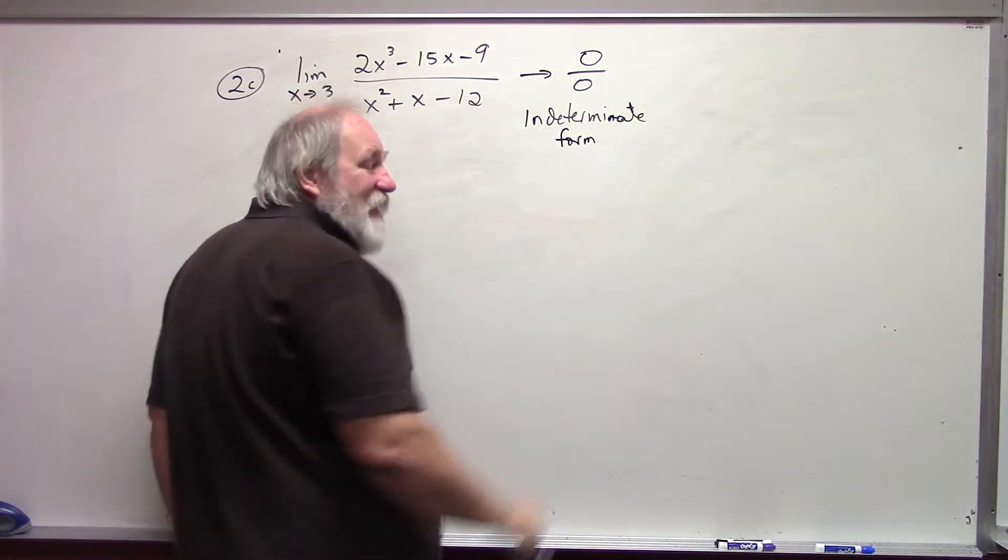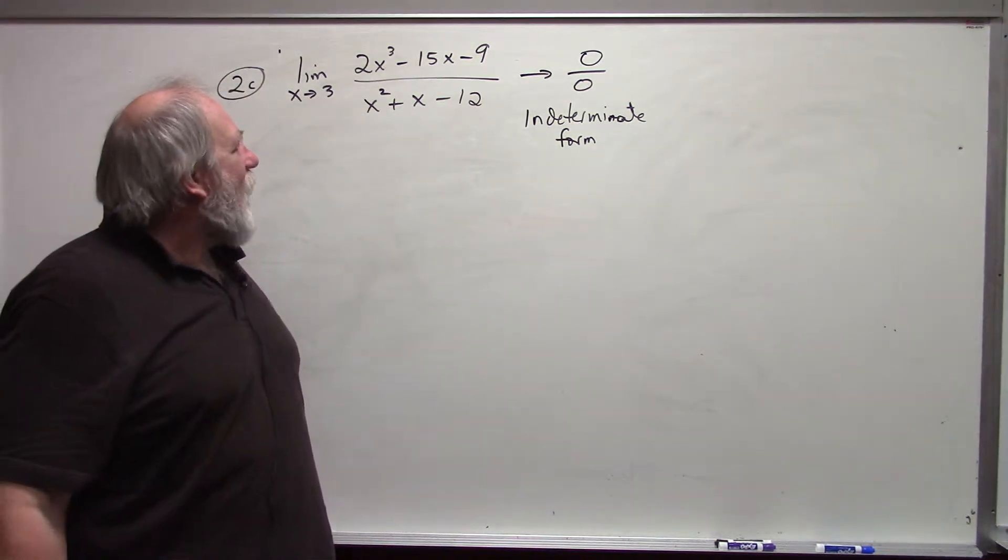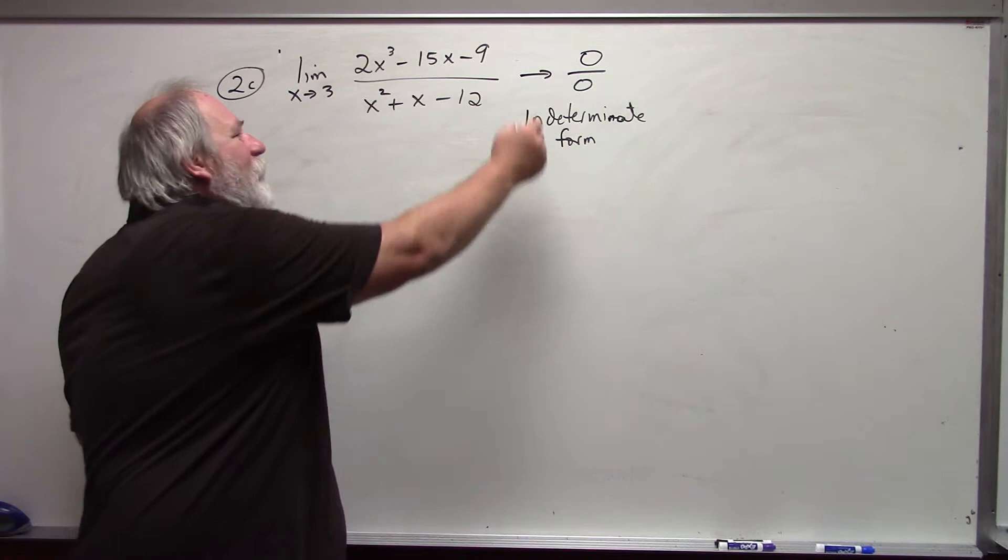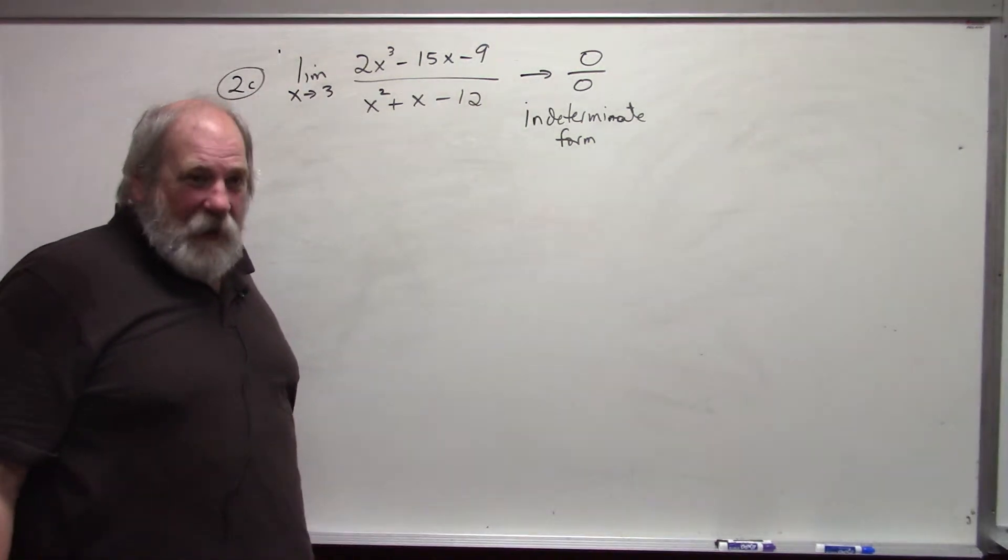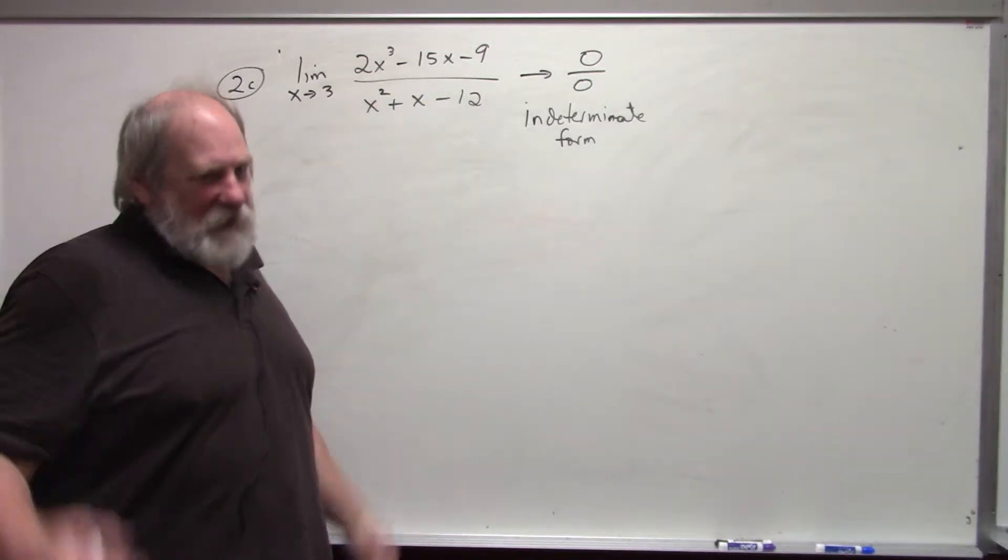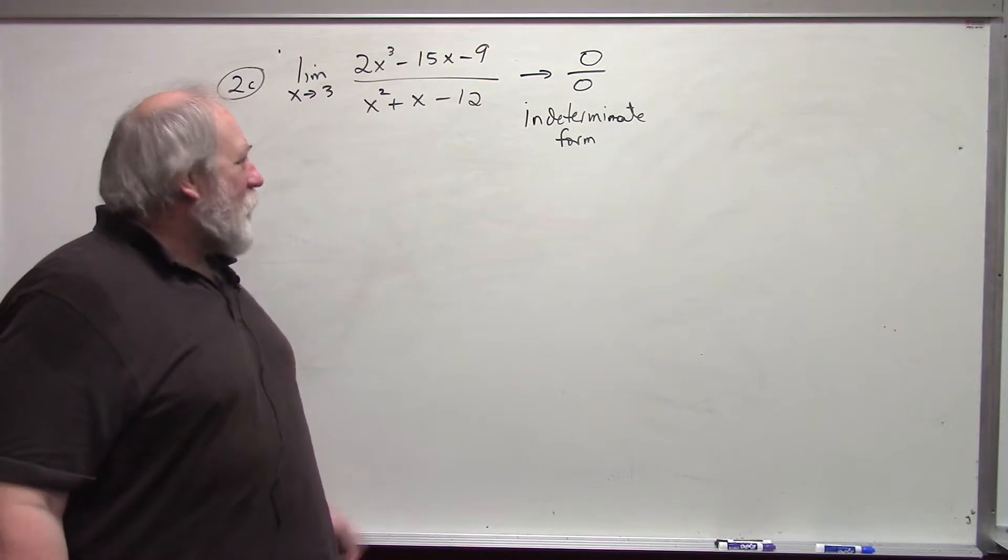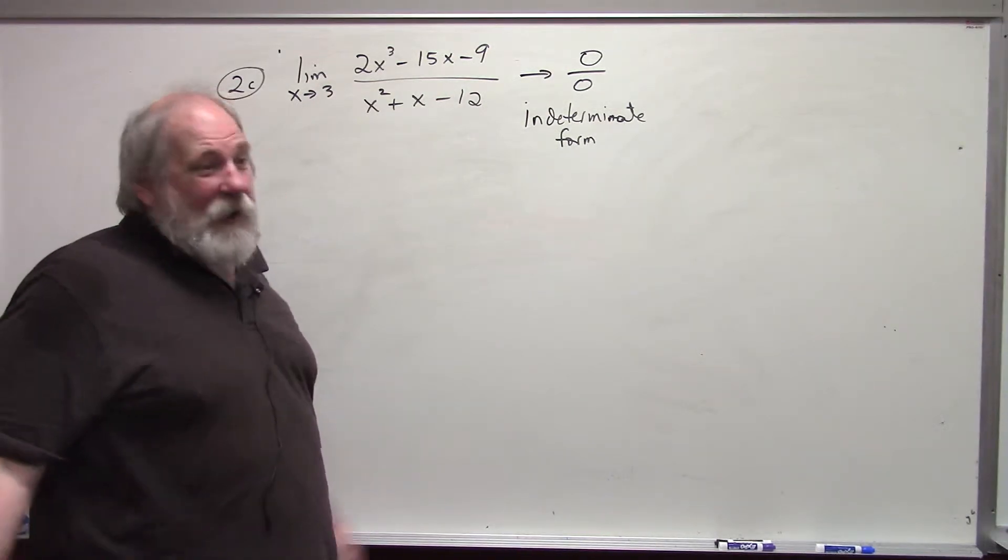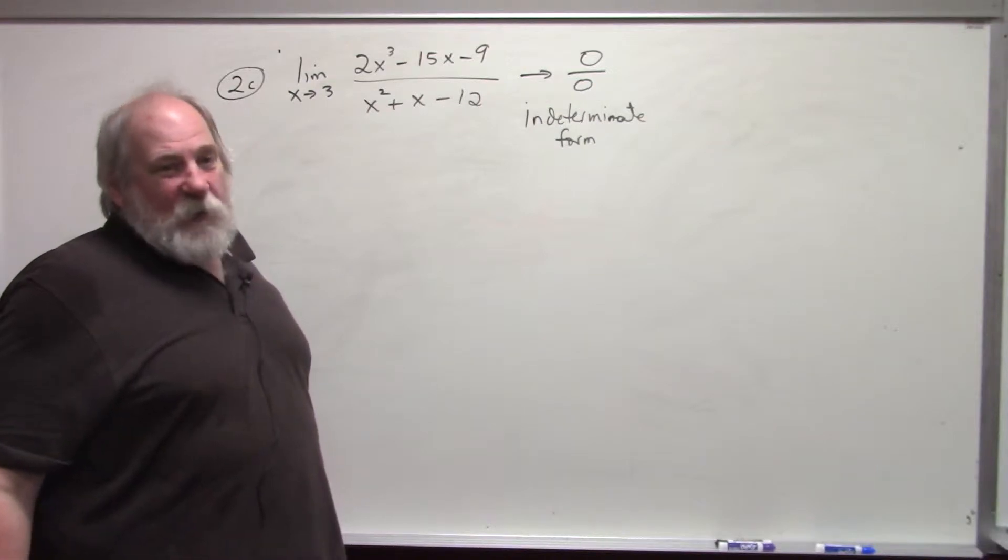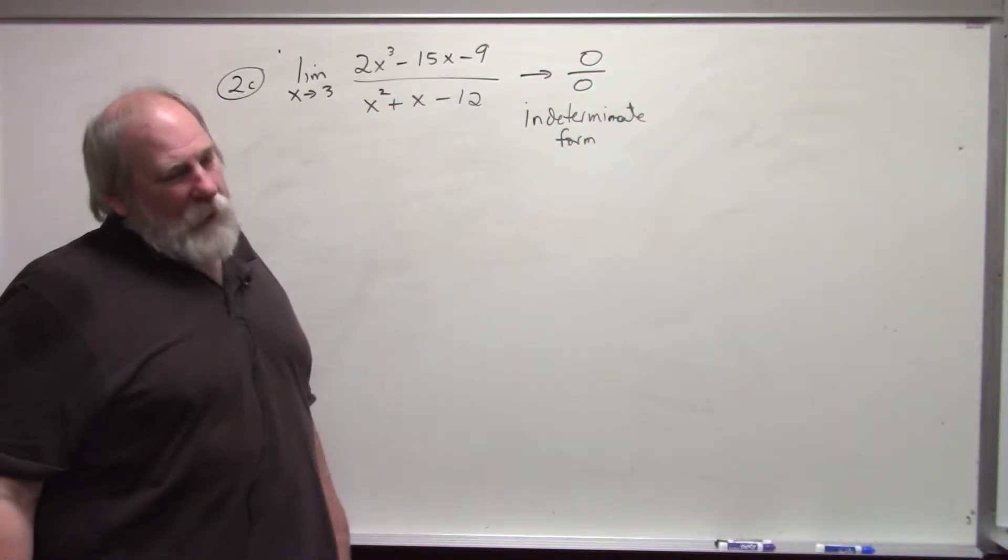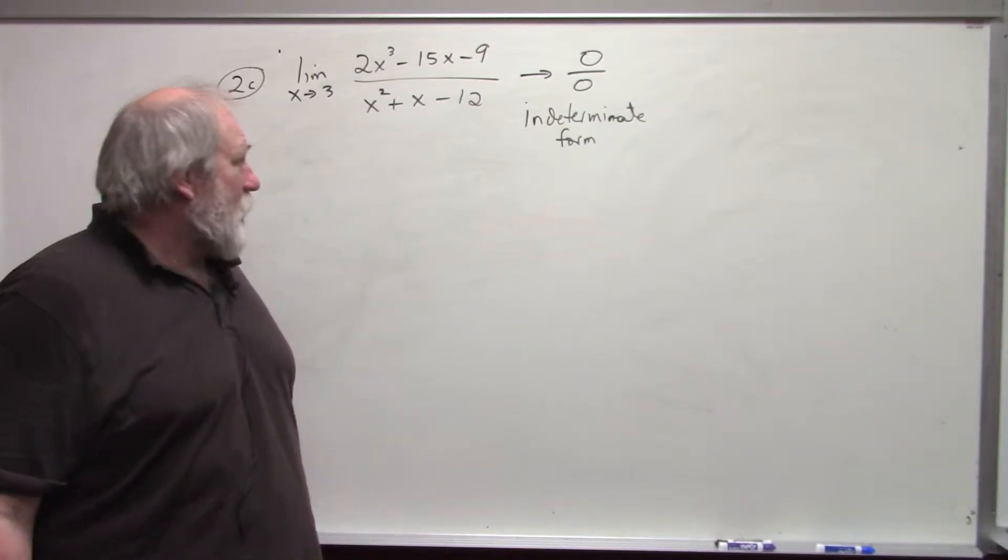Or an indeterminate limit. It means that the value of the limit cannot be determined in its present form. It does not mean that the limit doesn't exist. We do not know what happens with this particular limit. Anything can happen. It could approach any real number and it may not exist. We don't know.